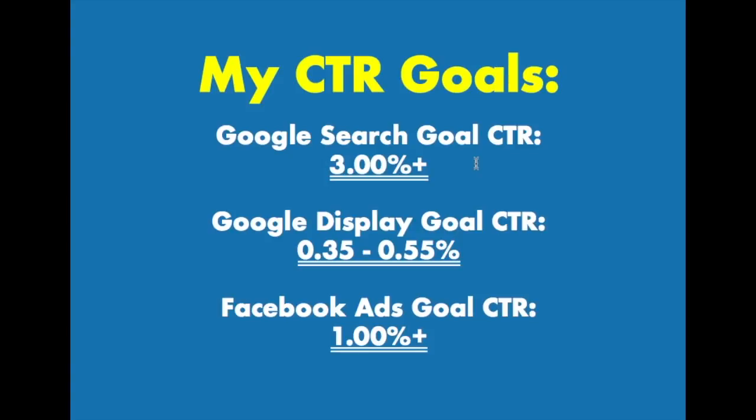Ultimately, what you want to do is let your quality scores guide you. So if you're seeing a set of 10 keywords where you have lower quality scores, and a set of 10 keywords where you have a quality score of 8 or above, what you want to do is try to optimize for those lower quality scores and see if there's any opportunities with some of those higher quality scores. Make sure that your conversions are matching that.